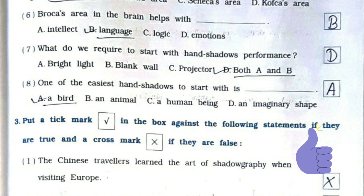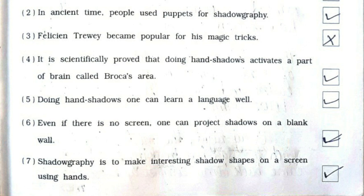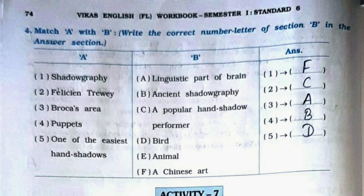MCQ answers: First, shadowgraphy is an art. Second, in olden days people used puppets for shadowgraphy — option D. Third, Felician Trewey left home at 15 years — option D, both A and B. Fourth, his shadowgraphy of famous people made Felician Trewey very popular — option C. Fifth, doing hand shadows activates a part of the brain called Broca's area — option A. Sixth, Broca's area helps with language — option B. Seventh, to start hand shadow performance we require option D, both A and B. Eighth, one of the easiest hand shadows to start with is a bird — option A.